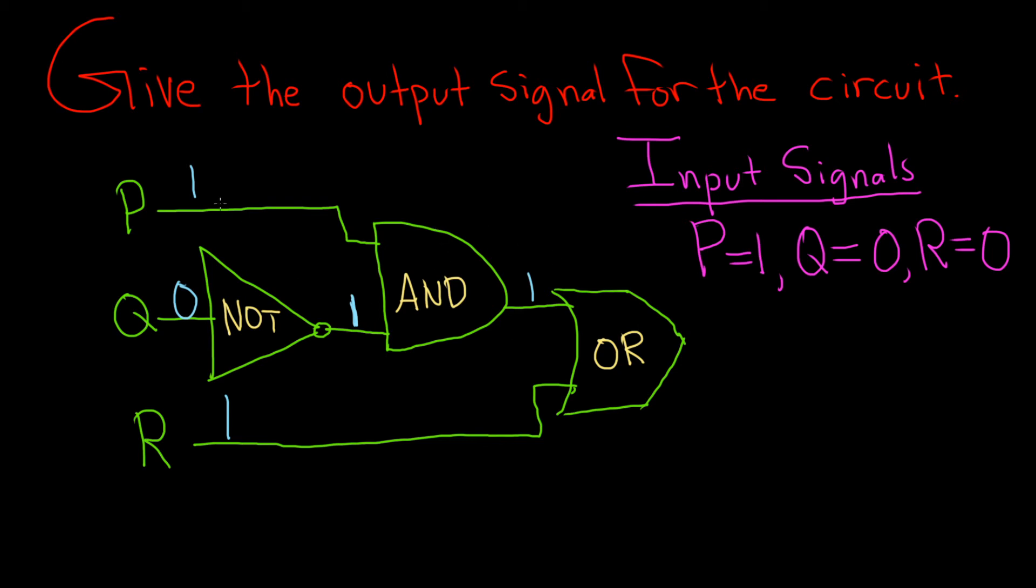Otherwise, it's false. If one of these is 0, the AND gate will give you a 0. So AND is always 1 if they're both 1s. Now you have two 1s entering the OR gate.